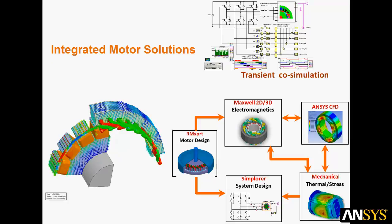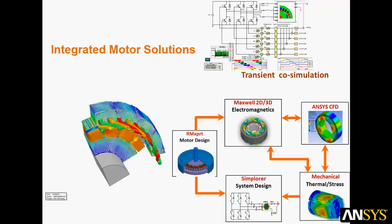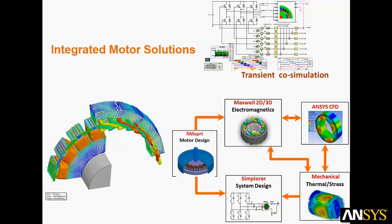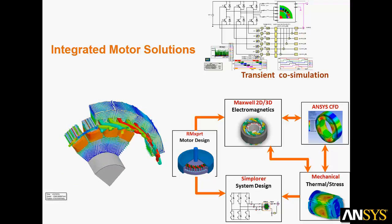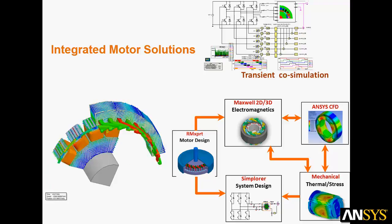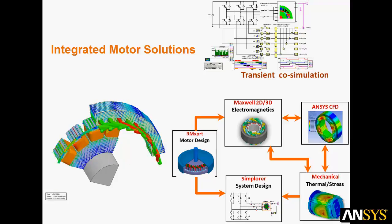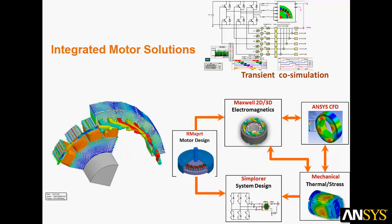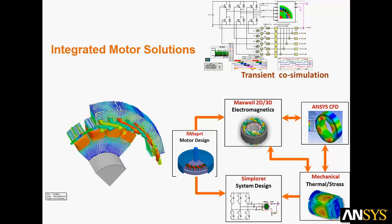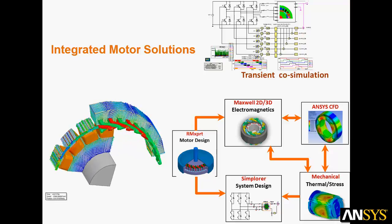ANSYS tools allow you to simulate complete integrated motor behavior by linking physics and systems solutions. RMXpert provides the initial motor design in 2D and 3D models. Maxwell performs 2D and 3D electromagnetics analysis. ANSYS CFD and ANSYS Mechanical are used for thermal and mechanical stress. And Simplorer ties all the physics together in a top-level system for drive circuits and other behavioral components.